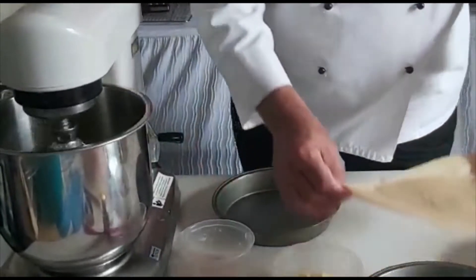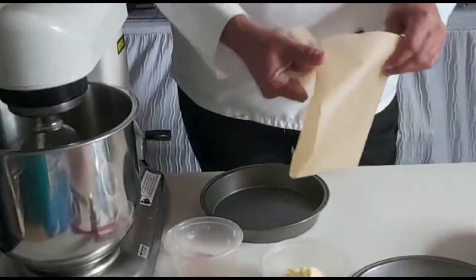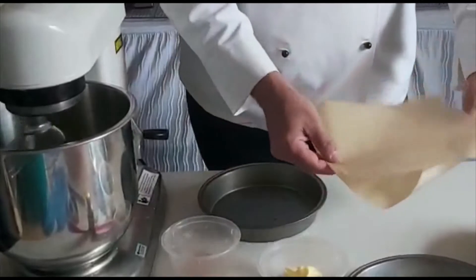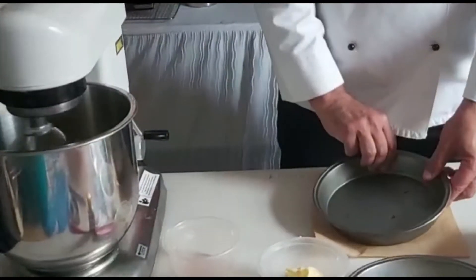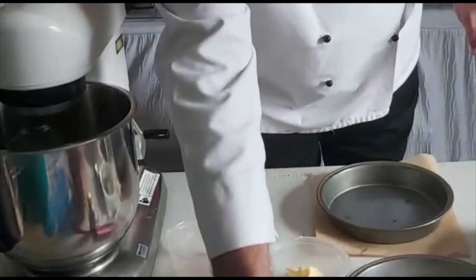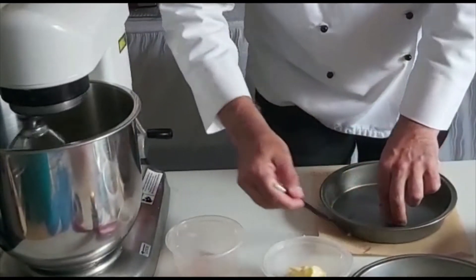So for this you will need some grease-proof or baking parchment. I've got a piece here I'm going to fold it in half. I'm going to put the bottom of the tin onto the paper and just basically draw around the bottom of it into a large circle.